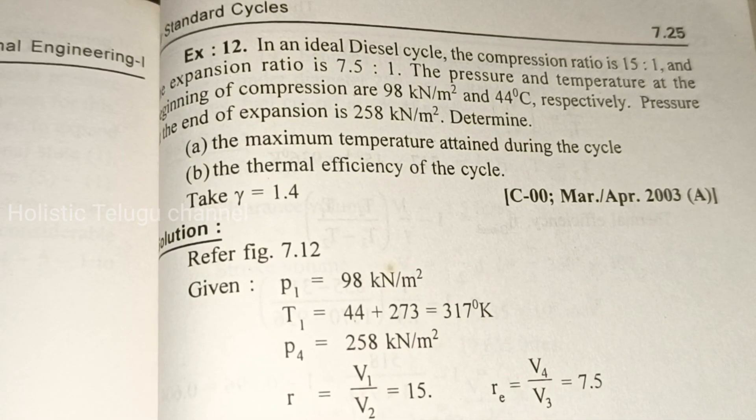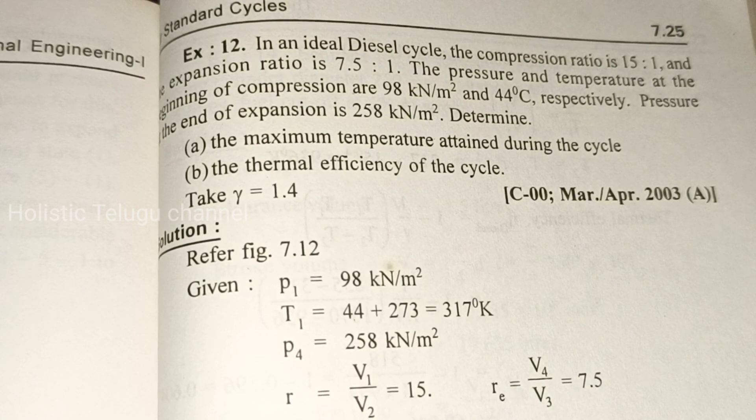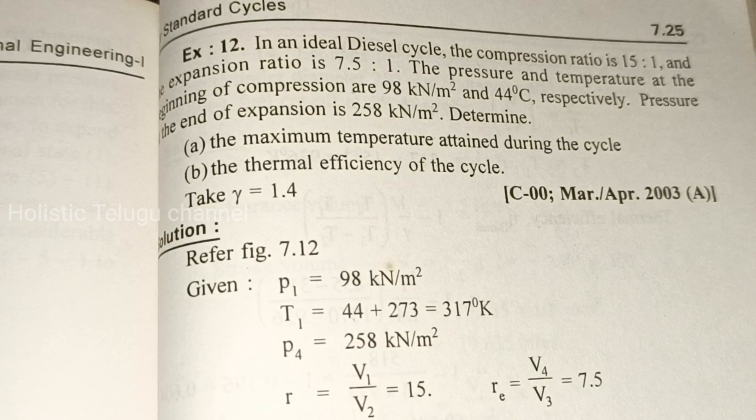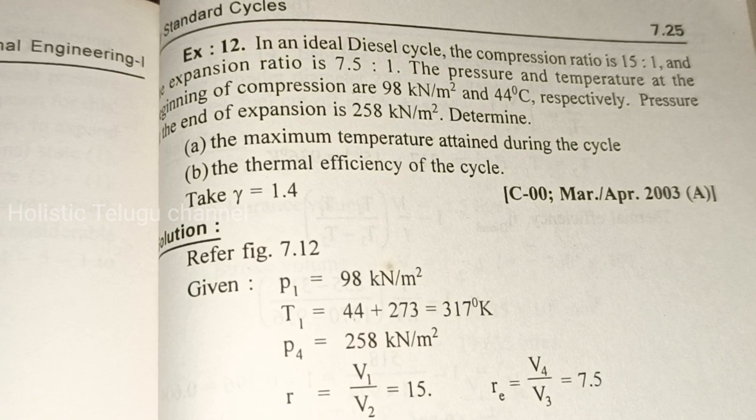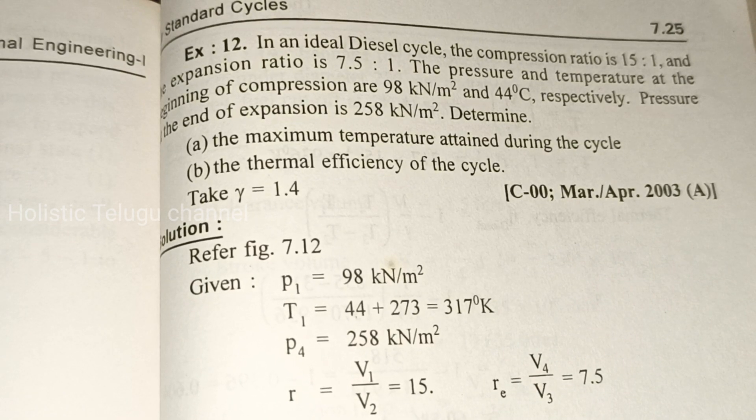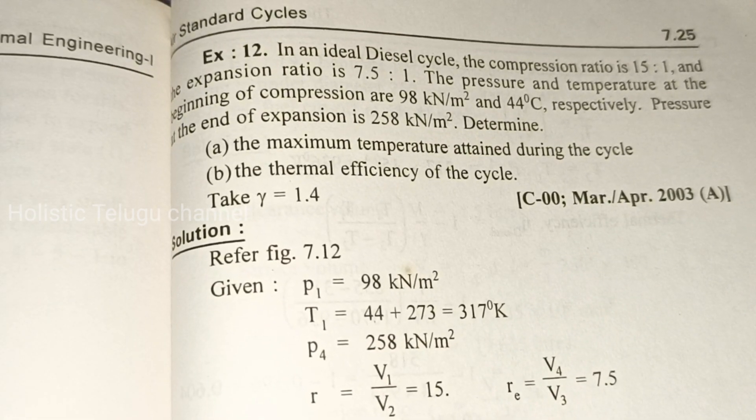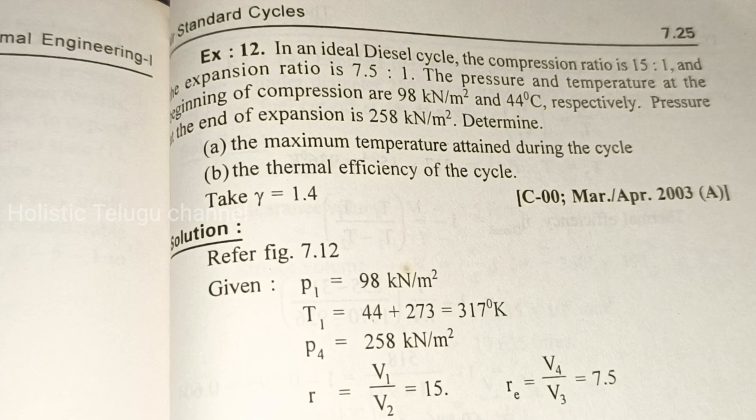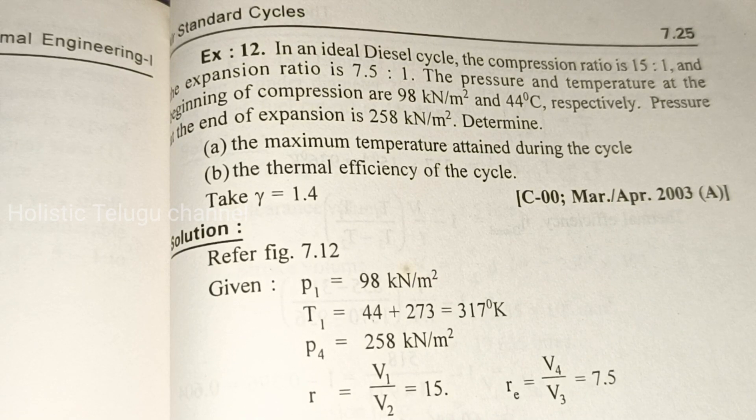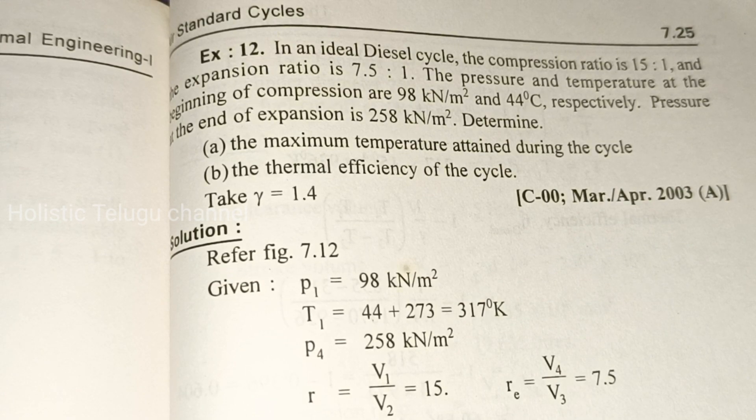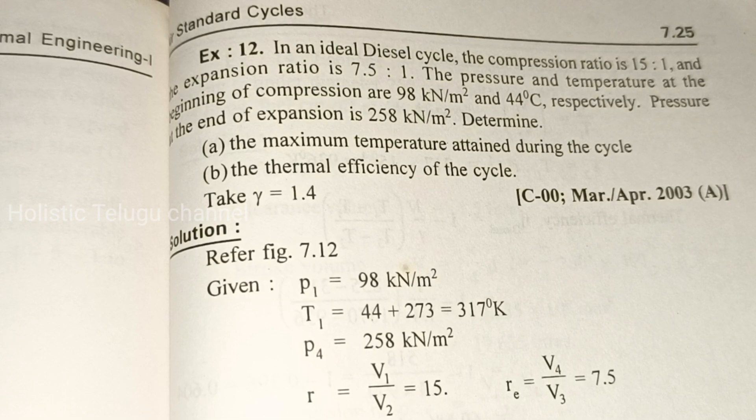In an ideal Diesel cycle, the compression ratio is 15:1 and expansion ratio is 7.5:1. The pressure and temperature at the beginning of compression are 98 kN/m² and 44°C respectively. Pressure at the end of expansion is 258 kN/m². Determine the maximum temperature attained during the cycle and the thermal efficiency of the cycle.